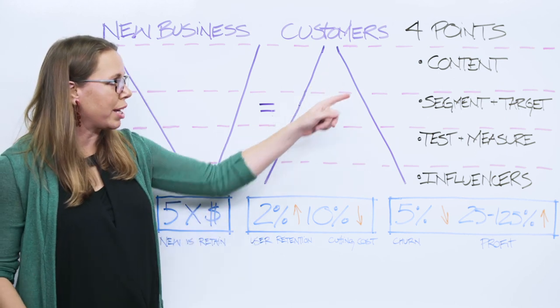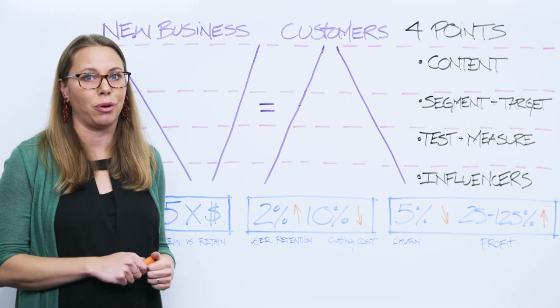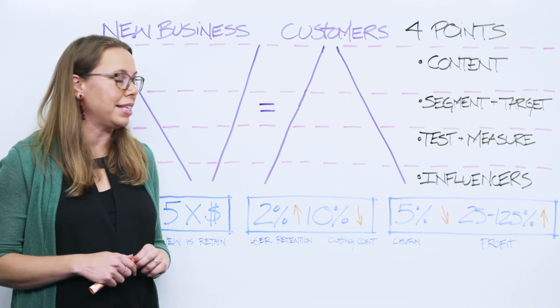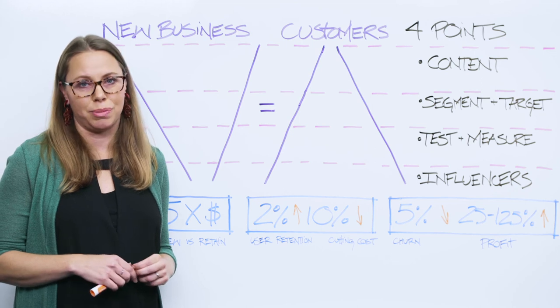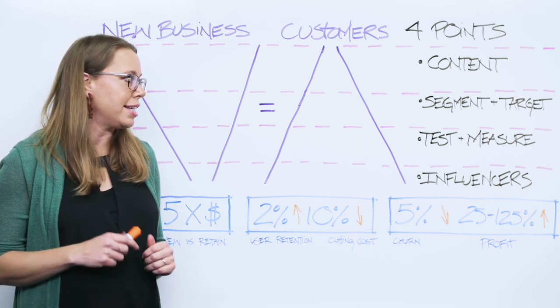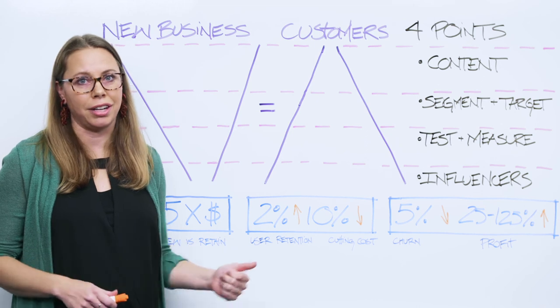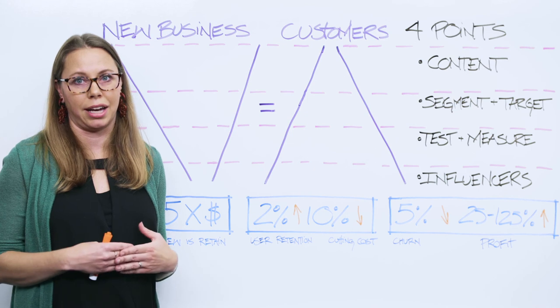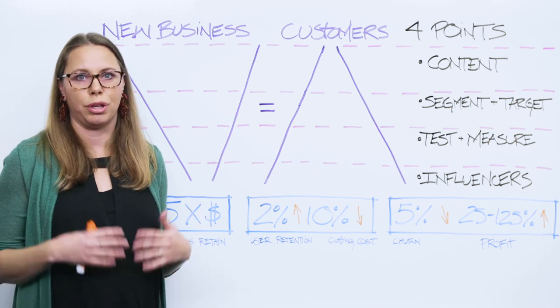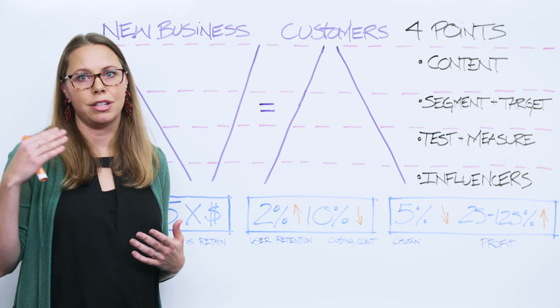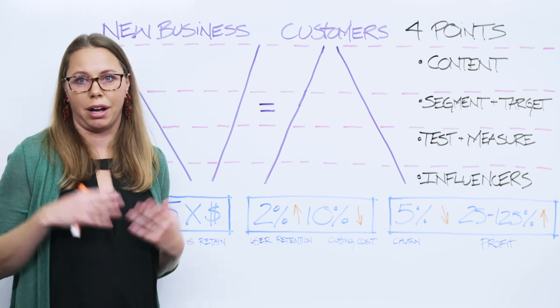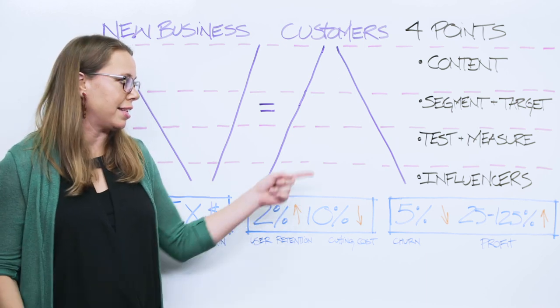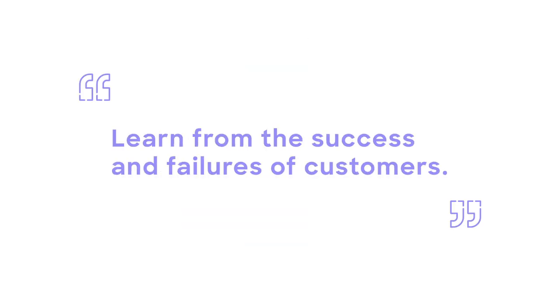When we think about these four points, content is king no matter what side of the business that you sit on. Segmenting and targeting is not just for new business. Apply it to your customers as well. Testing and measuring. Align your roadmap. Get your business intelligence people aligned with your internal company analytics. Know what's going on with your logo goals from retention, from money, to number of customers that you have. And lastly, don't be afraid to share the stories of your successes and the people that also failed because there's always learnings in it.